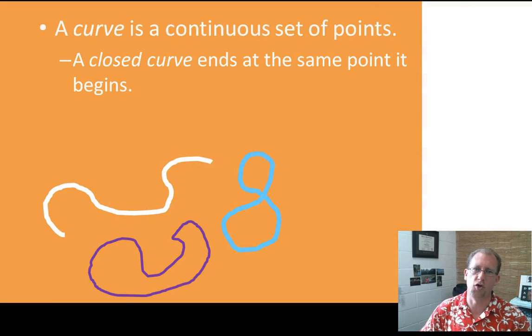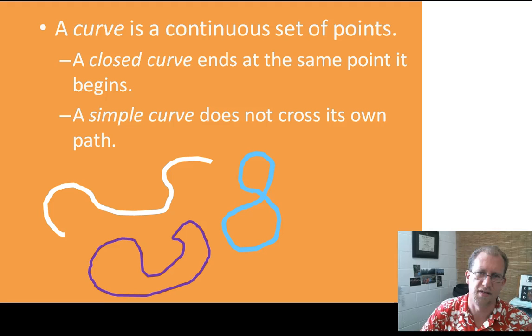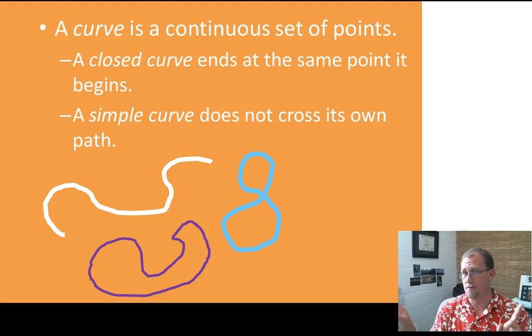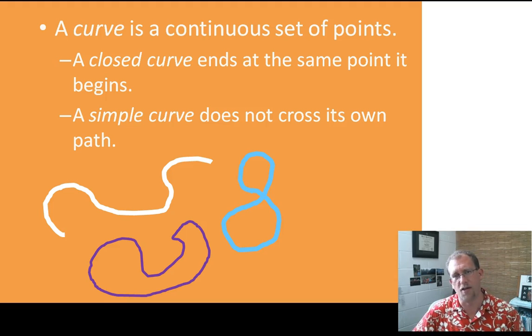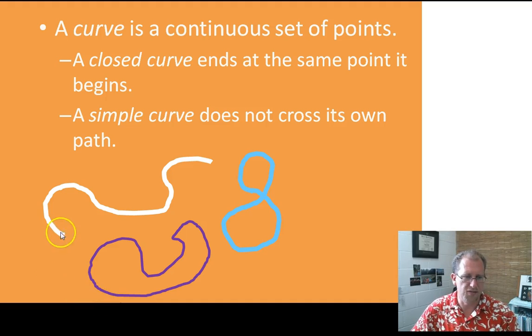We're going to be looking first at curves and what a curve is. Curves are any continuous set of points. Now it sounds like a line. A line is a continuous set of points that goes forever in two directions and one dimension. A curve is different. A curve does not have to be a straight line. A curve is curvy. So I've got a couple of curves there for you drawn on the bottom of the page, and there are some examples there, and there are some terms we want to use. A closed curve is any curve that starts and ends at the same point.